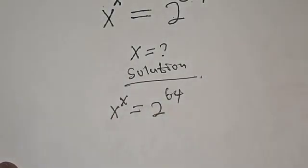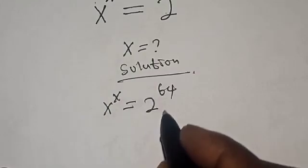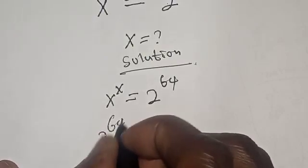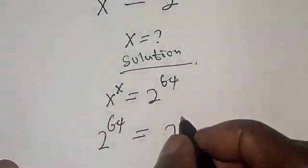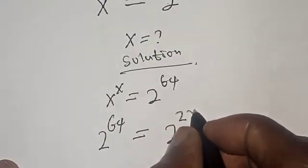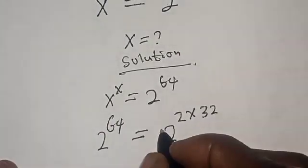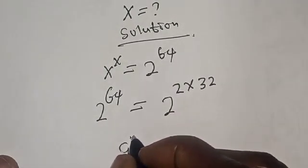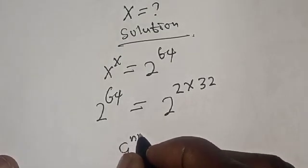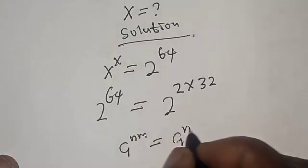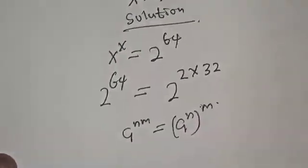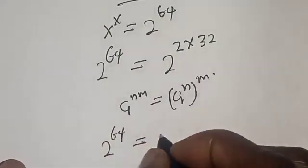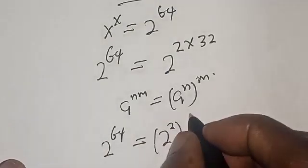Solution: we have the given equation s raised to power s is equal to 2 raised to power 64. Now let's consider the right-hand side. Our right-hand side is 2 raised to power 64, which is the same thing as 2 raised to power 2 times 32. Remember that a raised to power n times m is the same thing as a raised to power n, raised to power m. So we have 2 raised to power 64 is equal to 2 raised to power 2, then raised to power 32.